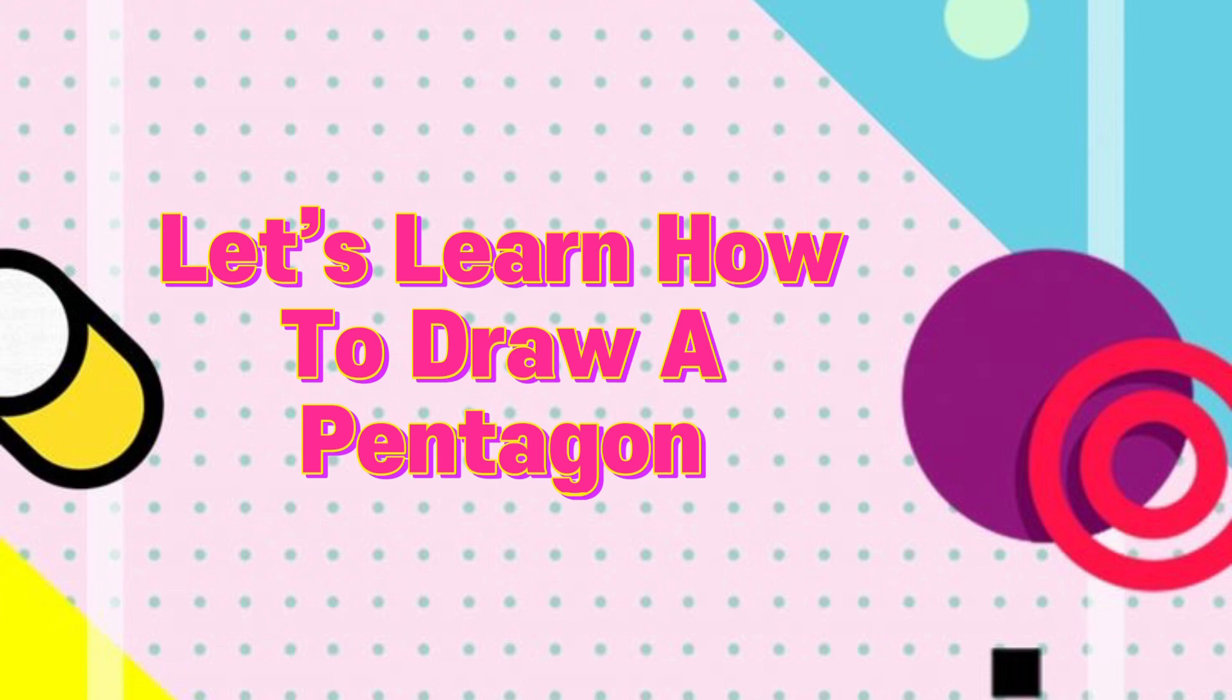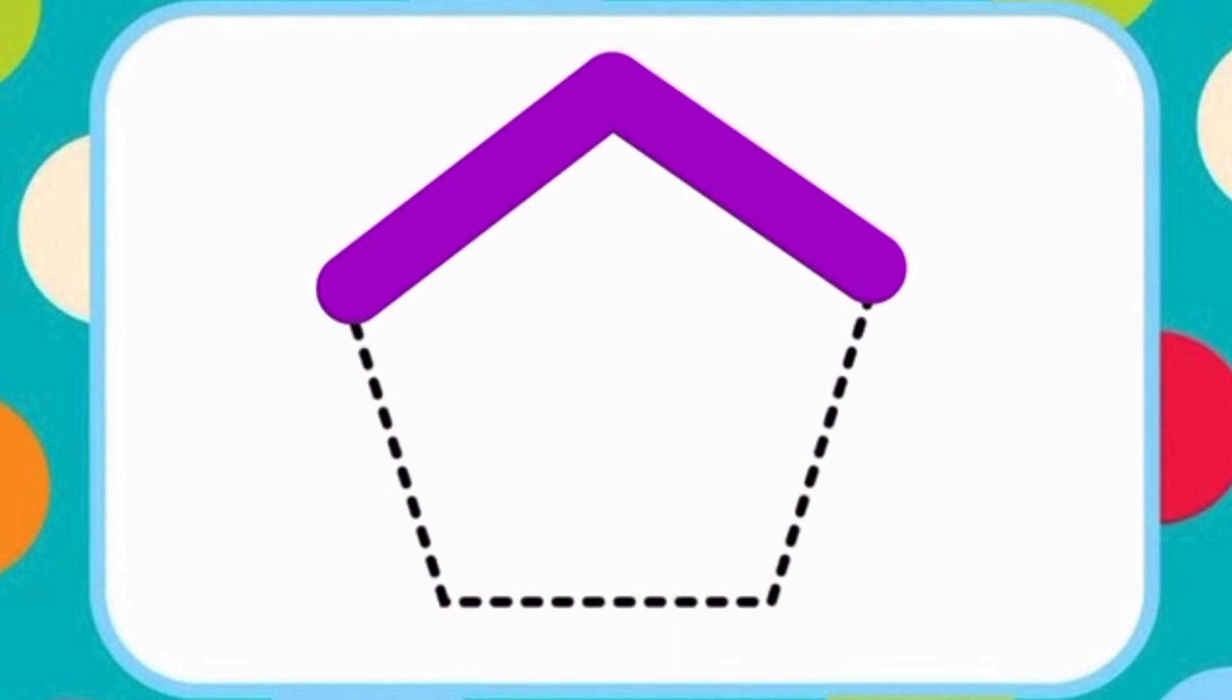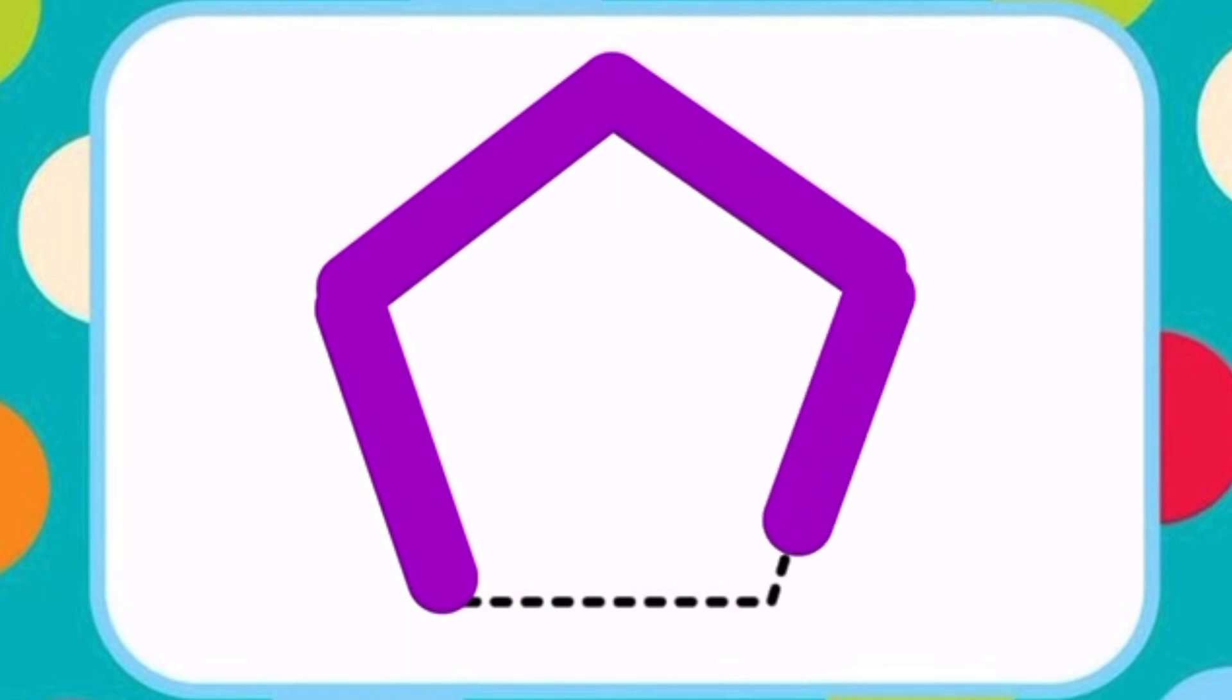Let's learn how to draw a pentagon. First draw a slanting line from a point. Then draw another slanting line from the same point. Now draw two slanting lines from the end point of the first and second slanting lines respectively. And then draw a sleeping line. This is how you draw a pentagon.